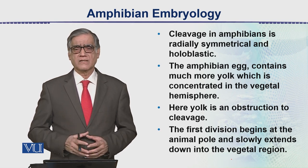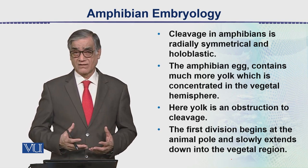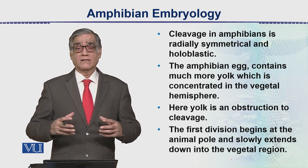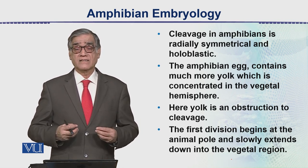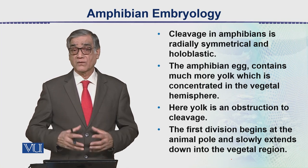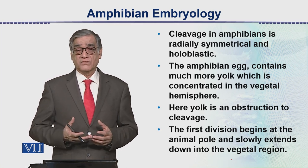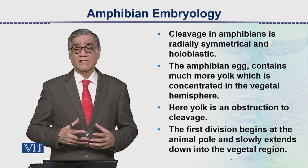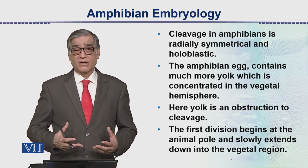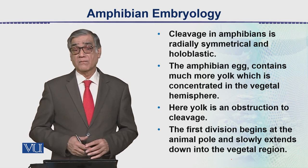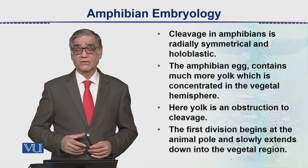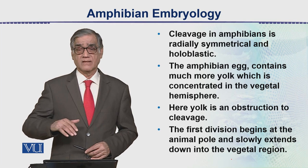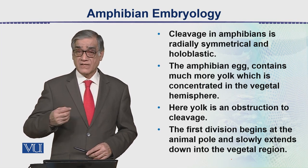Cell division is quite fast, and consequently the upper part has numerous smaller cells, while the lower half has larger cells at the vegetal pole. These are the two hemispheres: the animal pole and the vegetal pole.